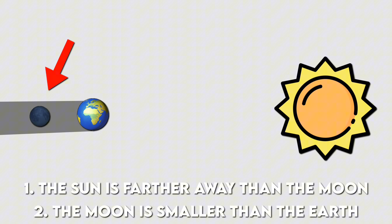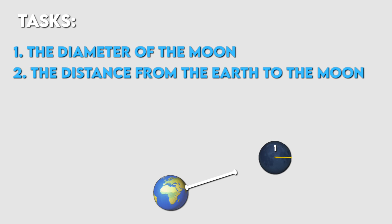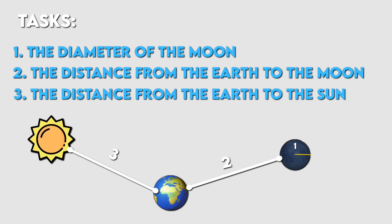Based on these insights, Aristarchus decided to calculate three things: the diameter of the moon, the distance from the Earth to the moon, and the distance from the Earth to the sun.